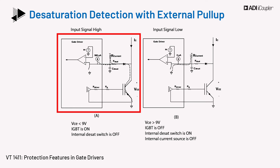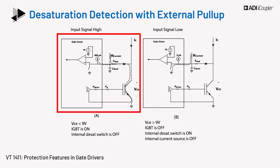During the high duration of the input signal, the IGBT is turned on and there is minimal voltage at VCE. After the masking time, the internal desat switch is turned off and the capacitor is allowed to charge to VCE. In case VCE increases above 9 volts and the IGBT tries to come out of the saturation region — a desat event — the capacitor voltage increases towards VCE. When the C-desat voltage rises above the 9 volt threshold, the internal desat threshold is exceeded, the part enters a failure state, and the driver turns off while gradually pulling the gate low.